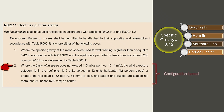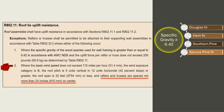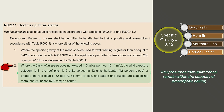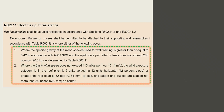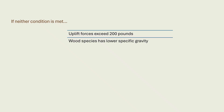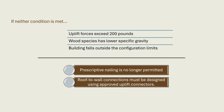The second condition is configuration-based and does not require explicit reference to an uplift force value. Under this provision, prescriptive attachment is permitted to meet all uplift demand where the basic wind speed does not exceed 115 miles per hour, the building is in exposure category B, the roof pitch is 5 to 12 or steeper, the roof span is 32 feet or less, and rafters or trusses are spaced no more than 24 inches on center. When all of these geometric and environmental limits are met, the IRC presumes uplift forces remain within the capacity of prescriptive nailing, regardless of wood species specific gravity. These two conditions operate as alternative compliance paths, not cumulative requirements. If neither condition is met — due to uplift forces exceeding 200 pounds, lower specific gravity lumber, or the building falling outside configuration limits — then prescriptive nailing is no longer permitted and roof-to-wall connections must be designed using approved uplift connectors.